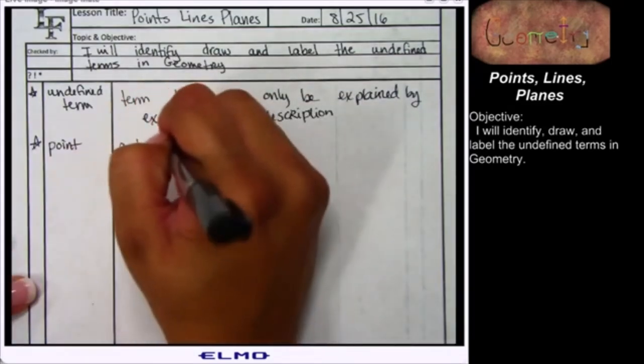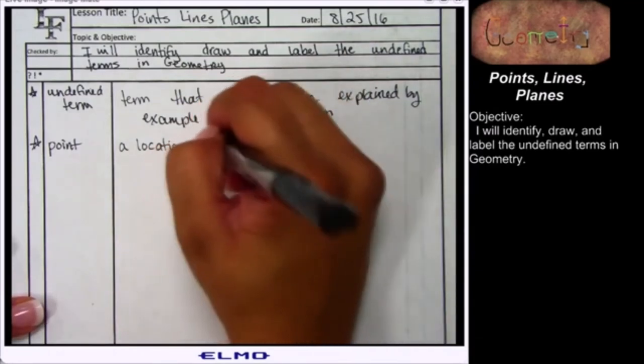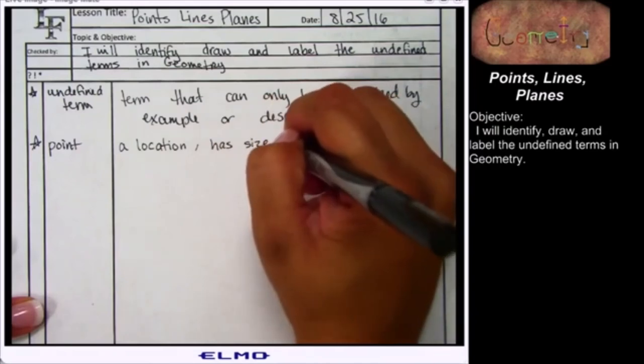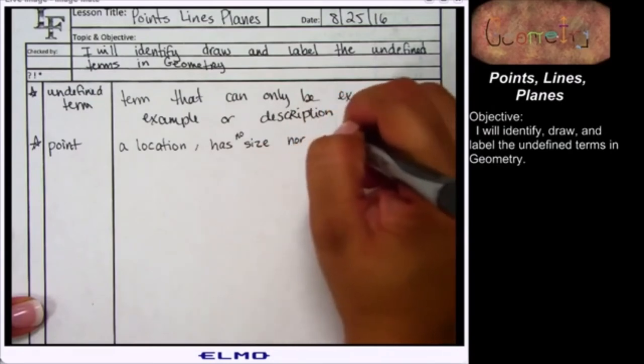The only way to describe what a point is, is to say it's a location. I can tell you that this location is not going to have a size, nor is it going to have a shape.